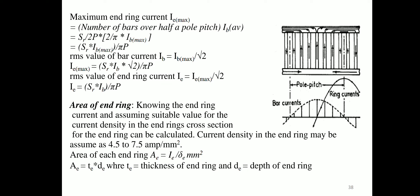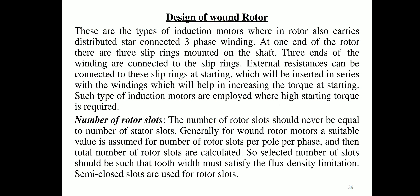In wound rotor induction motors, the rotor also carries distributed star-connected three-phase windings. At one end of the rotor, three slip rings are mounted on the shaft. The three ends of the winding are connected to the slip rings, and external resistances can be connected to these slip rings at starting, inserted in series with the windings to increase starting torque.